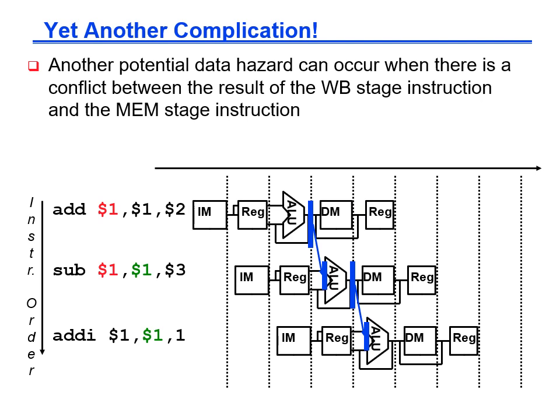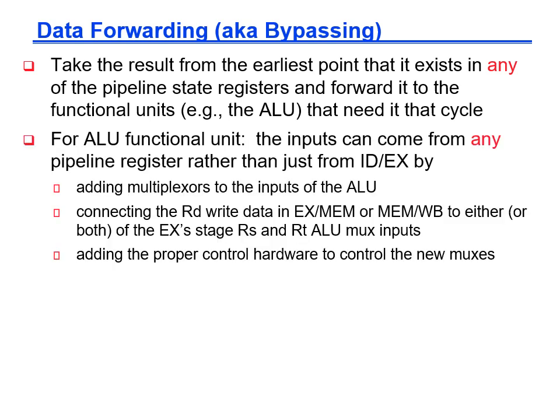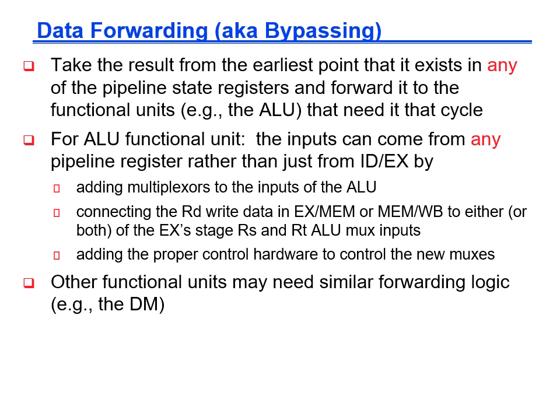This diagram shows the correct order of forwarding within this example. The key to correct implementation of forwarding is that the result to forward must be the most recently produced value in program order. The primary complications are that the forwarded value can come from any later stage in the pipeline and that there may be multiple values to choose from. As always, we can solve these decisions by implementing them with multiplexers and control signals, and the main difficulty is to implement the logic for the MUX selectors.